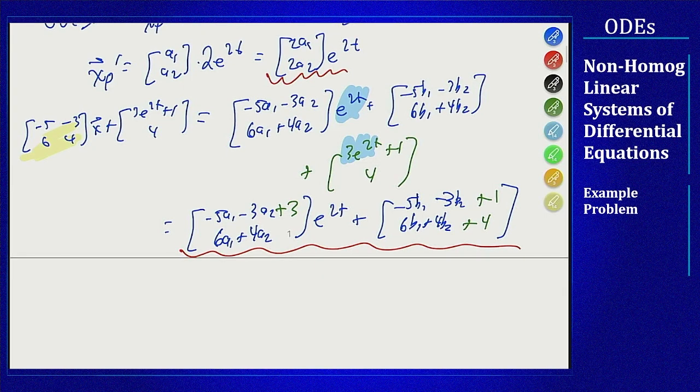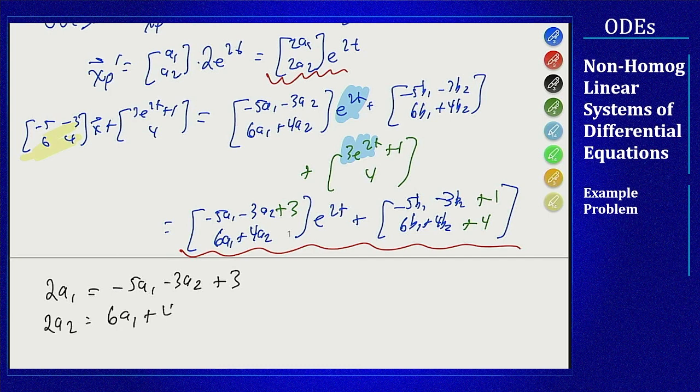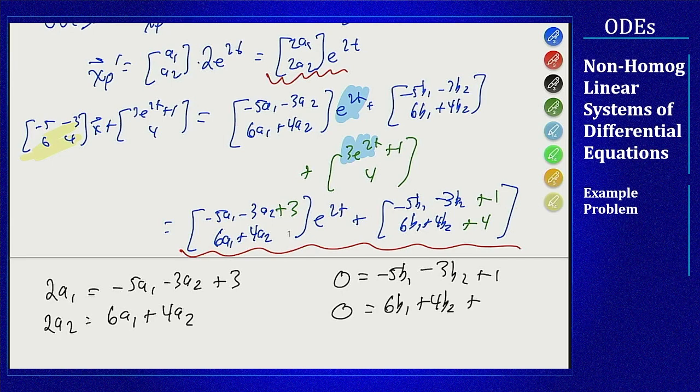For instance, for e to the 2t in the first component, 2a1 equals minus 5a1 minus 3a2 plus 3. For the second component, 2a2 equals 6a1 plus 4a2. And for the constants, there's no constant term in the x prime term, so 0 equals minus 5b1 minus 3b2 plus 1, and 0 equals 6b1 plus 4b2 plus 4.